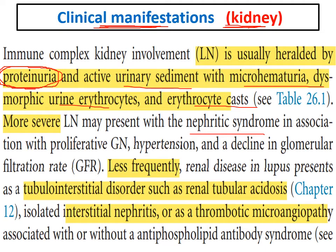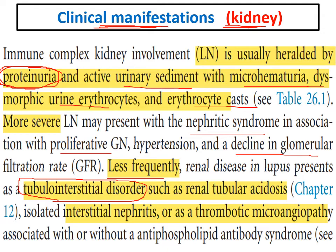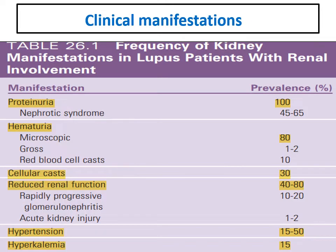In class 3 and 4, there is decline in GFR with elevated urea and creatinine. Less frequent is tubular-interstitial disease — lupus affects not only the glomeruli but also the tubules, interstitium, and blood vessels. Tubular-interstitial involvement can present as renal tubular acidosis, interstitial nephritis, or thrombotic microangiopathy (TMA), especially in cases with overlapping antiphospholipid syndrome. This is a very nice table showing the prevalence of manifestations in lupus nephritis.